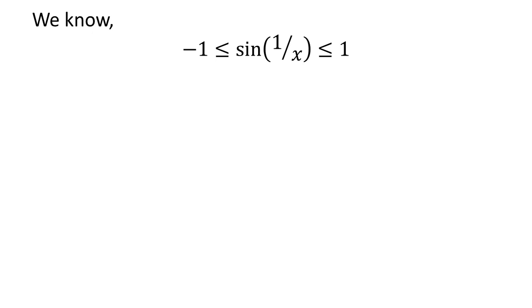We know sine of 1 upon x varies from minus 1 to 1. That is, the minimum value of sine of 1 upon x is minus 1 and the maximum value of sine of 1 upon x is 1.